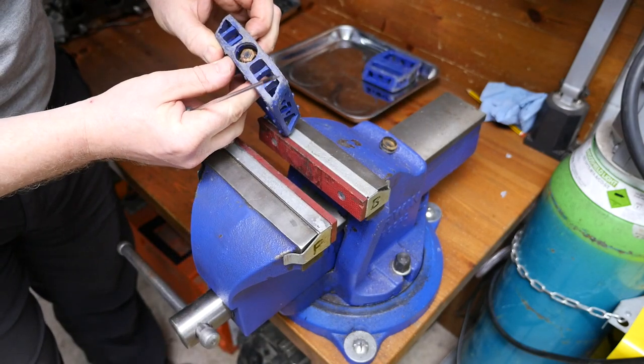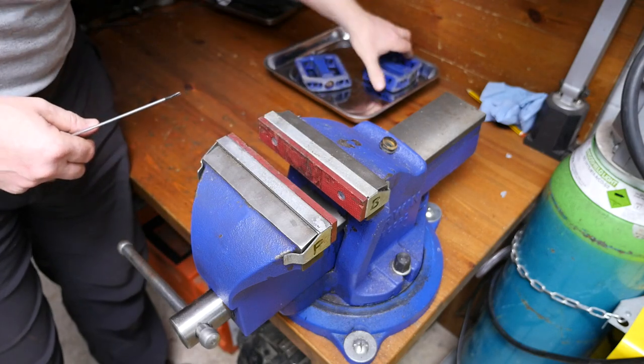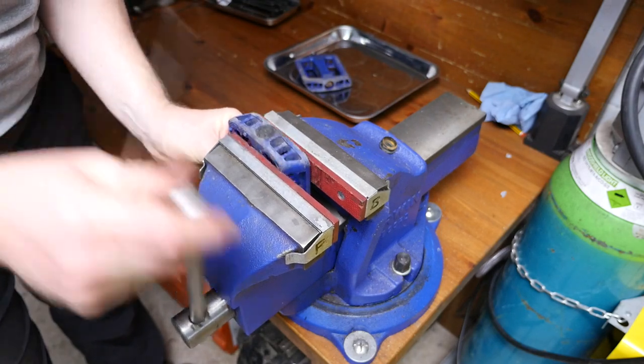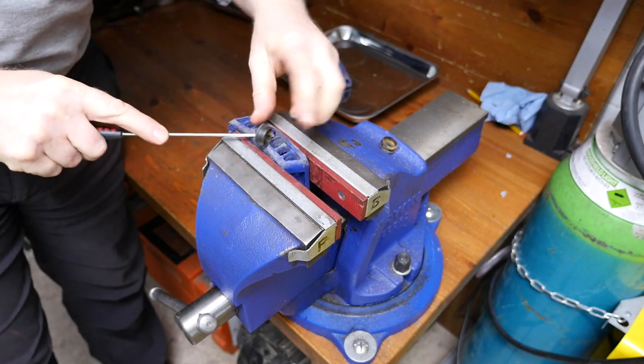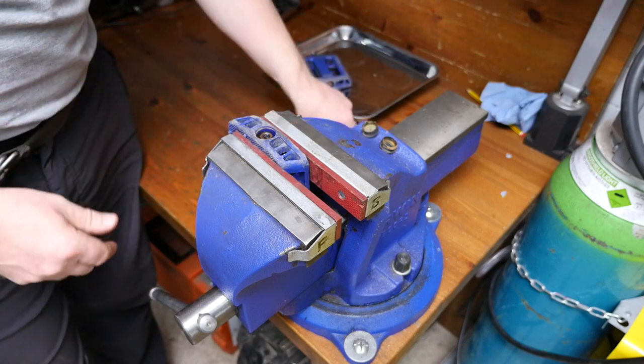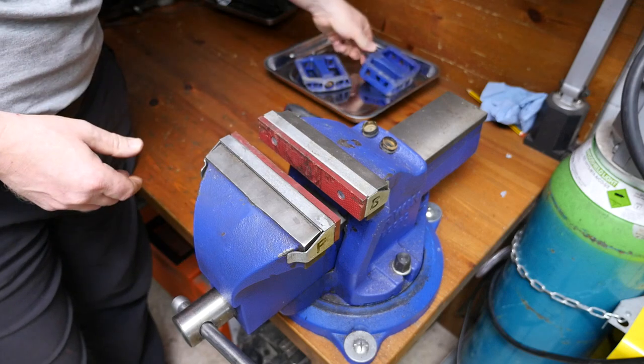So you can see that one's quite rusty in there. Definitely no signs of grease. I'll just do the other pedal as well, see what we find in this one. Whoops! There we go. Lost that. Hope that wasn't a ball bearing. And this one looks a little bit cleaner.